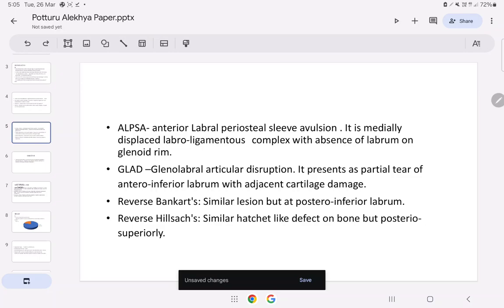GLAD is glenolabral articular disruption. It presents as partial tear of anteroinferior labrum with adjacent cartilage damage. Reverse Bankart is similar lesion but at posteroinferior labrum. Reverse Hill-Sachs is similar hatchet-like defect on bone but posterosuperiorly.